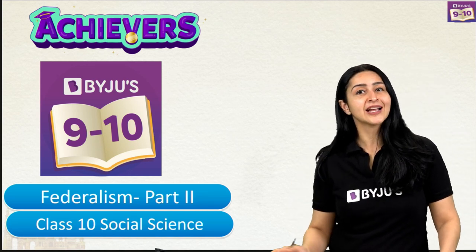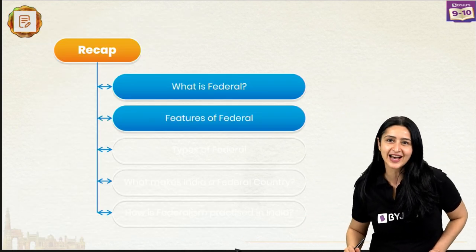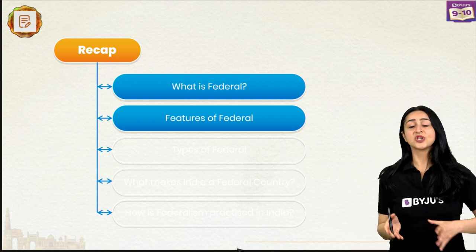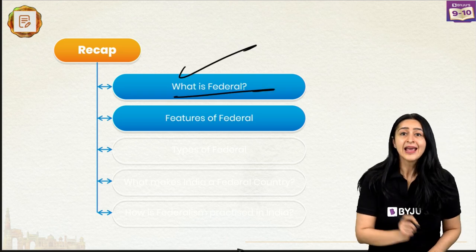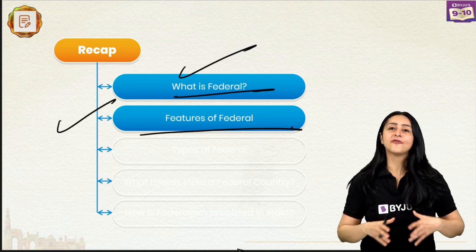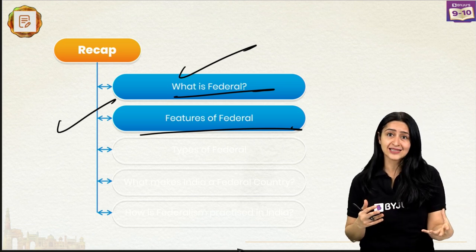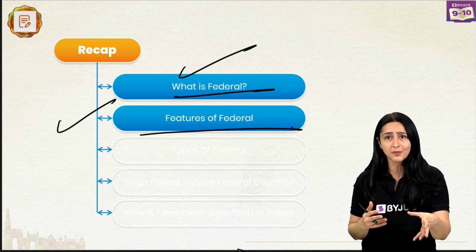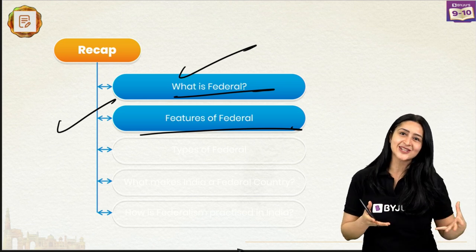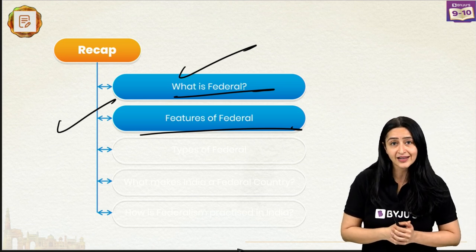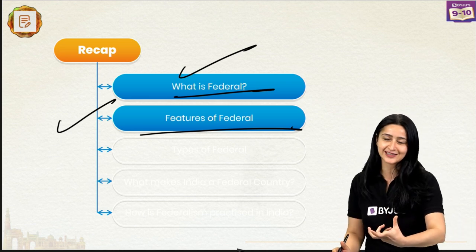We had done part 1 of this chapter last week so let's do a quick recap of our last session. In the last session, we learnt about what is Federalism and we spoke about the features of Federalism or a Federation. In case you haven't watched that session, you can go check out part 1 on our 9th to 10th channel. I would recommend that you do because what we are doing today is a continuation of that section.